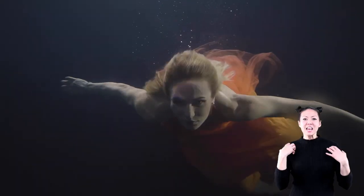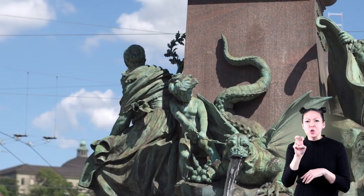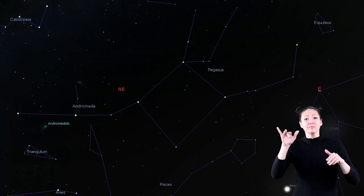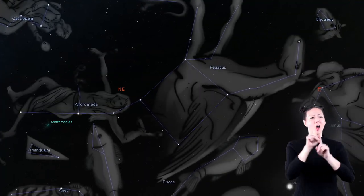The Greeks and Romans made up stories about gods, heroes, and creatures such as serpents, dragons, or flying horses. They then named various constellations after them.